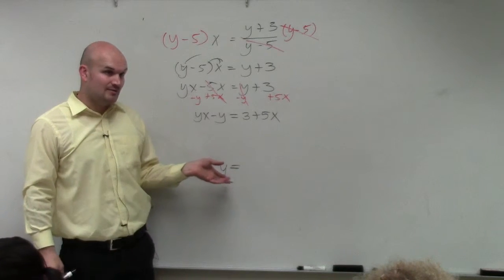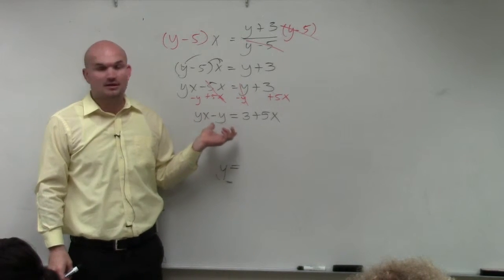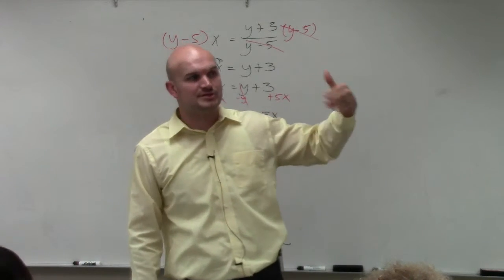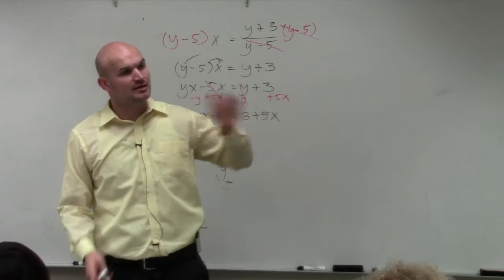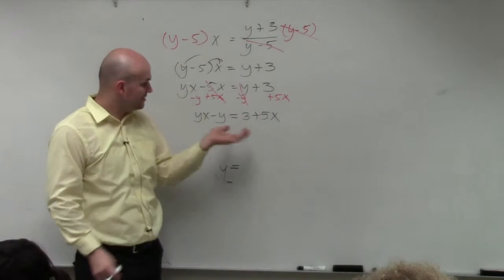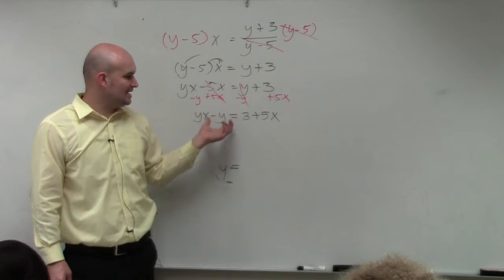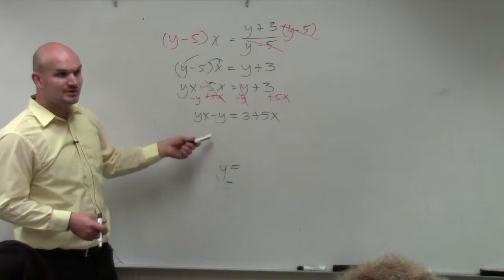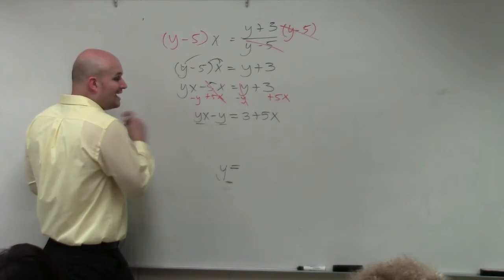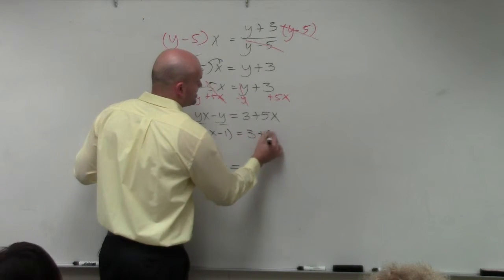Now, usually to get this to be 1y, we like to combine the numbers. Well, we can't combine them because they're not like terms. And the only other way we learned in Algebra 2 is when we have unlike terms but they're quadratic, we could do a different factoring technique — like x squared and x, we set it equal to 0 and factored. But here, they're both linear, just not like terms, so we can't use any quadratic factoring techniques. But what we can do is factor out the y. When I factor out the y, I'm left with y times (x minus 1) equals 3 plus 5x.